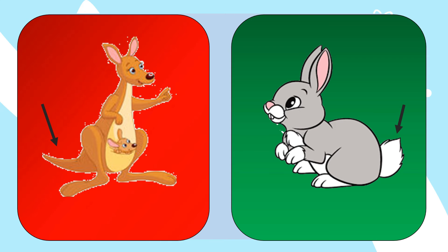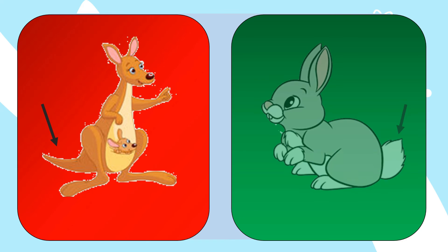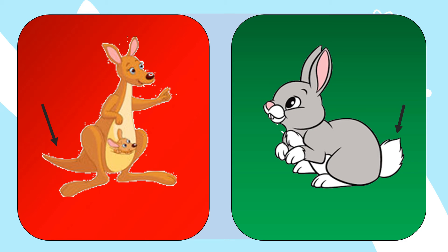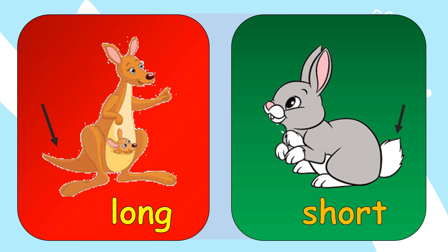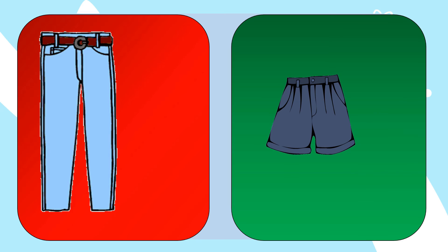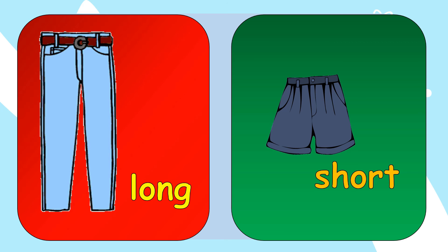Next, let's try to identify the length of the tail of a kangaroo and a rabbit. The tail of the kangaroo is long, and the tail of the rabbit is short. Let's also identify the length of the blue pants and the short pants. The blue pants is long, and the short pants is short.